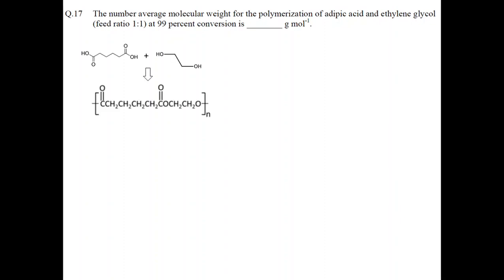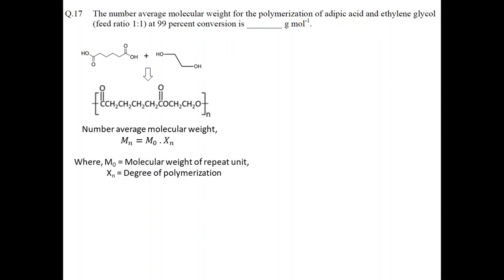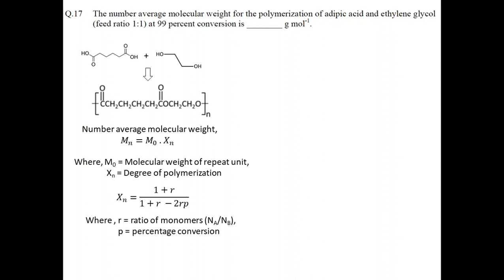In this question, we need to find the number average molecular weight of the polymer at 99% conversion. The monomers adipic acid and ethylene glycol are in equimolar ratio. The number average molecular weight can be represented by a simple equation requiring the degree of polymerization and molecular weight of the repeat unit. For a two-monomer system, with r equal to 1 for equimolar conditions, the degree of polymerization equation reduces to a very simple form, and we can substitute the 99% conversion value directly.